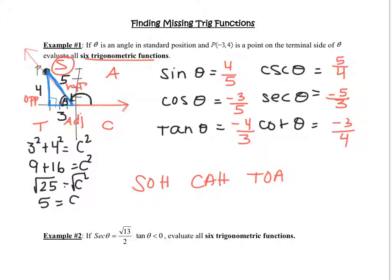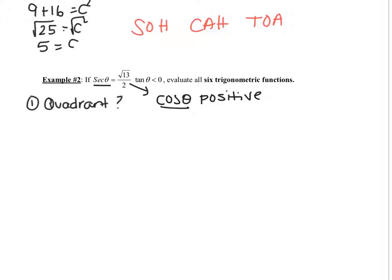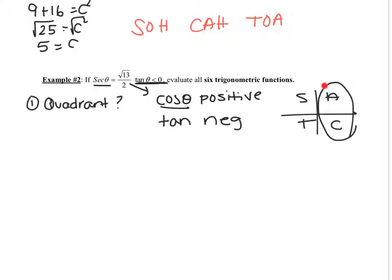I'll help you set up example two, and you can finish it on your own. It says secant theta equals √13/2 and tangent is less than zero — evaluate all six trig functions. First, determine the quadrant. Secant is positive (√13/2), which implies cosine is positive, since secant and cosine are reciprocals. Tangent is negative. Drawing ASTC: cosine is positive in quadrants one and four; tangent is negative in quadrants two and four. So we must be in quadrant four.